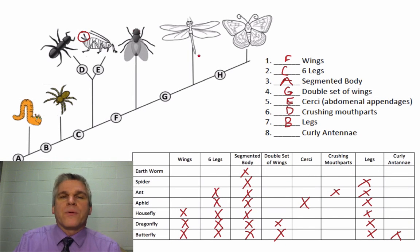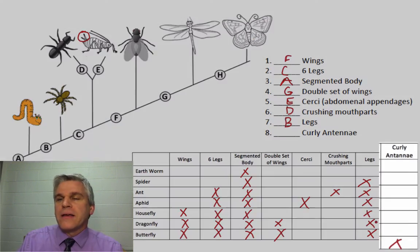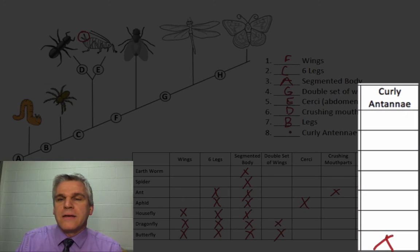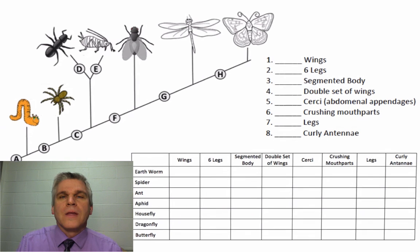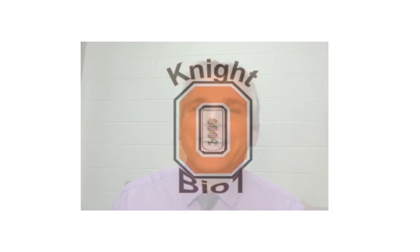And then what separates the dragonfly from the butterfly? That would be the curly antenna, which would be labeled H. In the next part of your paper, you are going to be making a table based on the pictures of the animals that you see. And then from that table, you are going to create a cladogram. So as you're going through this, if you run into any problems, just let me know — I'll be more than happy to help you.